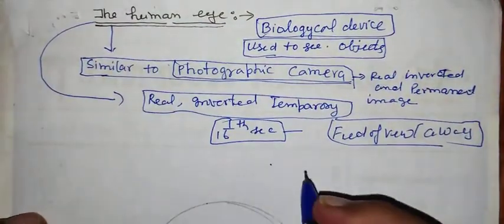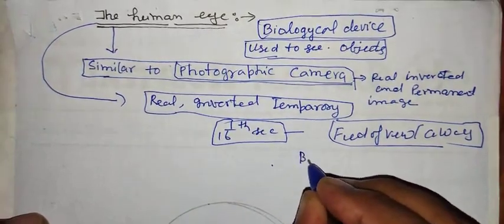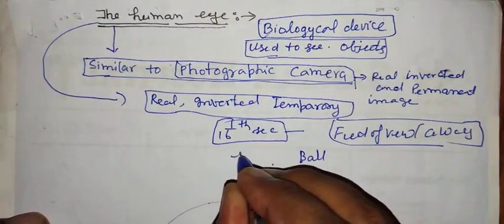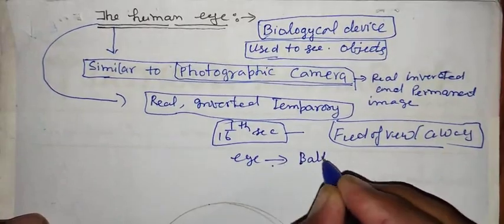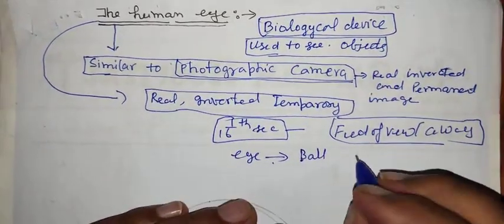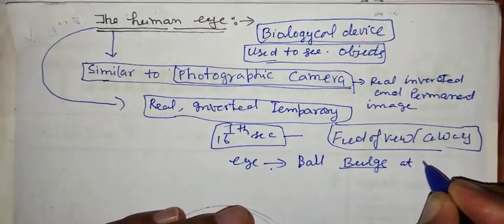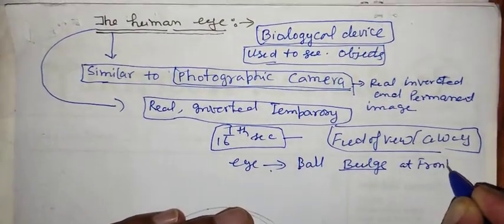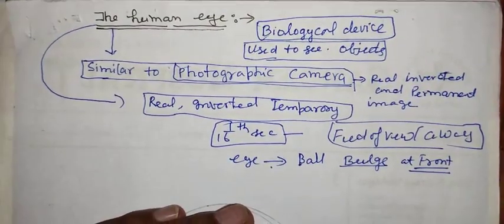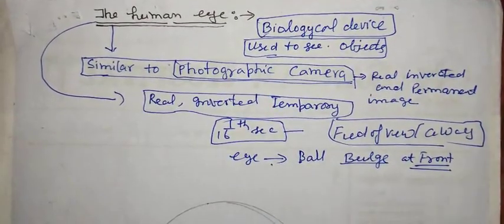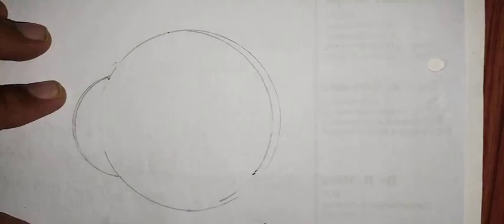In the human eye, the human eye can be considered as a ball, little bulky at the front. See the structure of the human eye carefully. Consider this human eye as a ball, with the bulky inside at this front side.